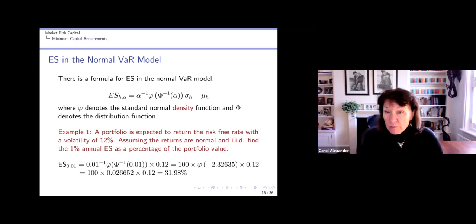And if we use the normal linear VaR model, then there's a simple formula. Here's the, it's like the VaR formula, we've got the sigma H and we've got the mu H, just like we have in VaR. But this first thing here is not capital Phi to the minus 1, 1 minus alpha, it's something else. It's alpha, 1 over alpha, alpha to the minus 1, times the normal density of Phi to the minus 1 alpha.